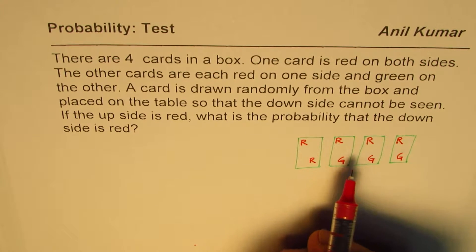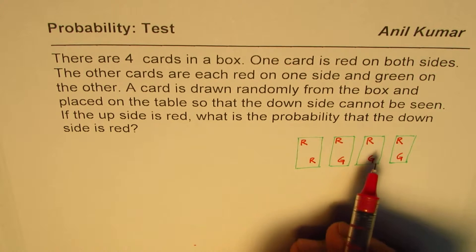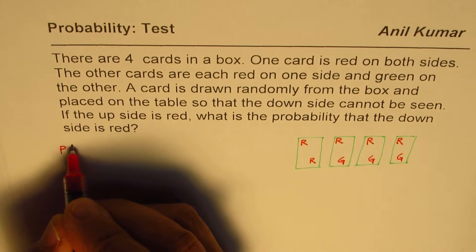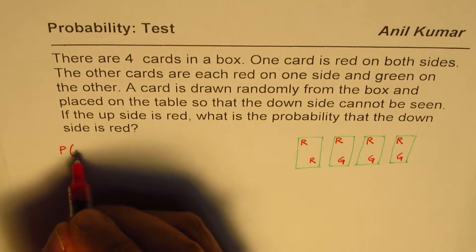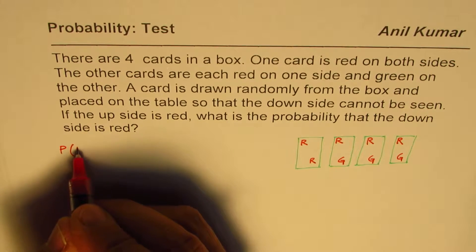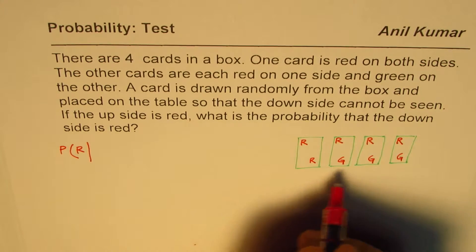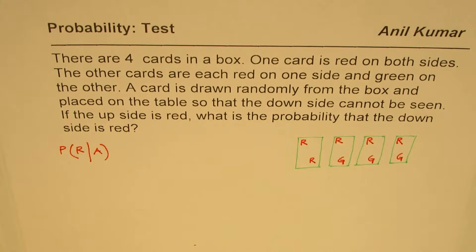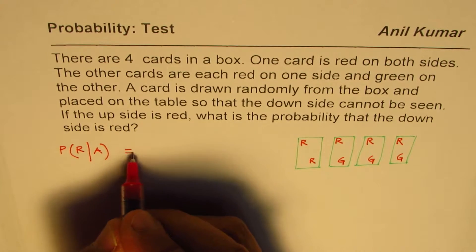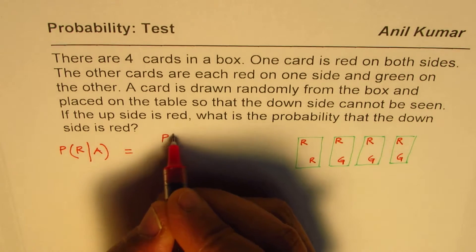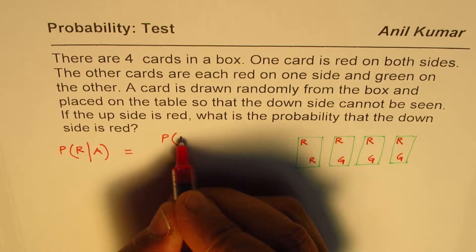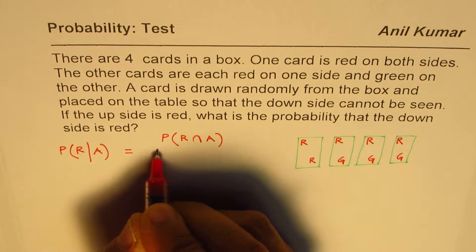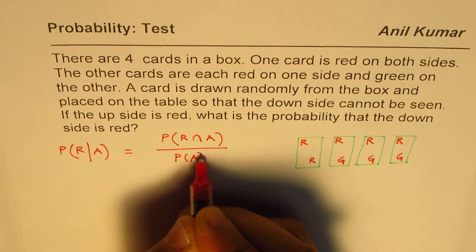So what we are given here is the card which is placed is red on the top. So what is the probability of getting a red card when the probability of the first event is known to us? So we can apply this formula that the probability will be probability of getting red card intersection A divided by probability of event A.